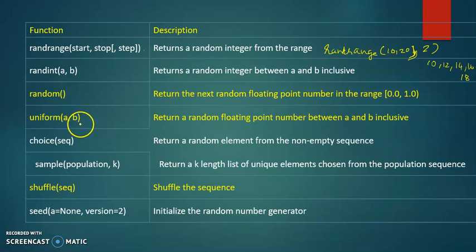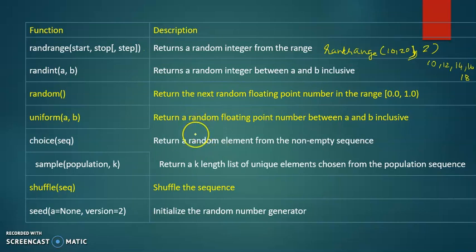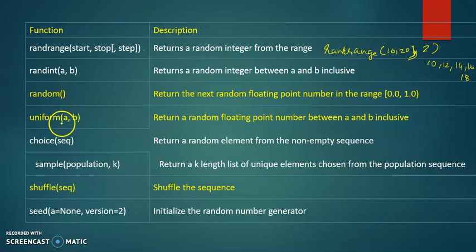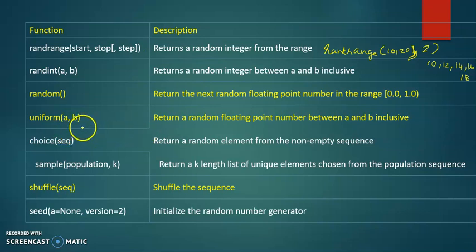The uniform function generates a floating point number between A and B, where both A and B are included. This is the difference between random and uniform: the random function takes no arguments and generates a value between 0 and 1 by default, while in the uniform function, we can specify what numbers to use and generate floating point values between them.